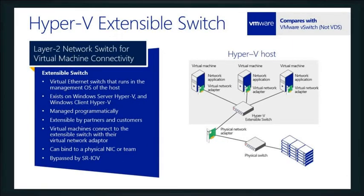Underneath the covers we have a layer-2 networking switch, and this is where you'll see some big differences between how we do things compared to VMware. The Hyper-V extensible switch built into Hyper-V servers compared to the vStandard switch — it's not the virtual distributed switch you have in VMware. To do those types of things, that's where VMM or vCenter comes into play. So understand we're talking about a standard switch environment — this is just what's built into Hyper-V itself.